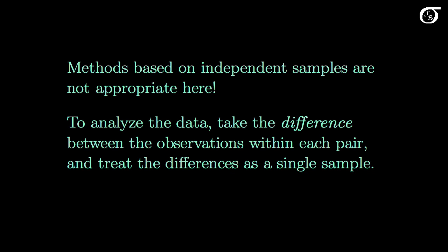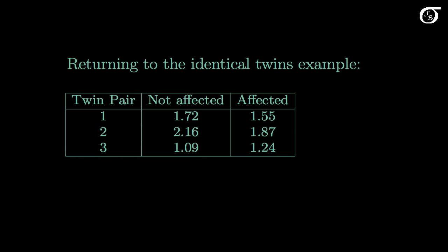Let's go back to the twins example to see what I mean by that. Here again is the data, and we're going to take the difference within each pair. I'm going to take the measurement for the affected twin and subtract that of the not affected twin. We just as easily could go in the other direction. We just need to keep track of which way we took the differences in order to reach the appropriate conclusions in the end.